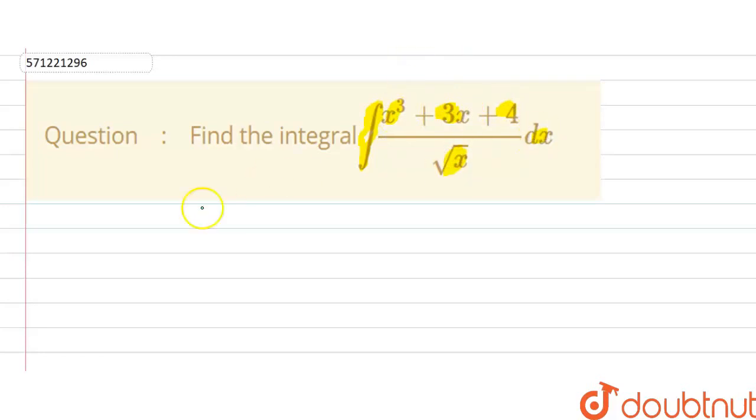Now, we see that our function is x cubed divided by square root of x plus 3 times of x divided by square root of x plus 4 divided by square root of x. And whole term is equal to dx.